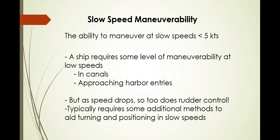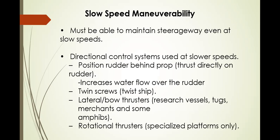Slow speed maneuverability is the ability to maneuver at slow speed, or less than five knots. A ship requires some level of maneuverability at low speeds in canals and approaching harbor entries. As speed drops, so too does rudder control, typically requiring additional methods to aid turning and positioning at slow speeds — such as twin screws, lateral bow thrusters, stern thrusters, or tugs and mooring boats for berthing, for example rotational thrusters or specialized platforms.